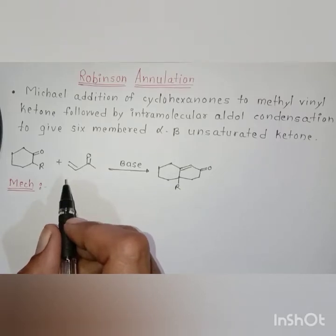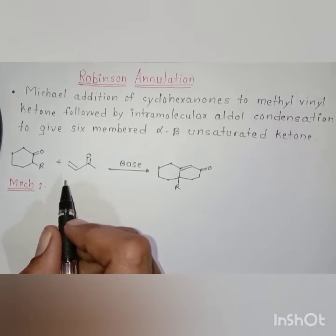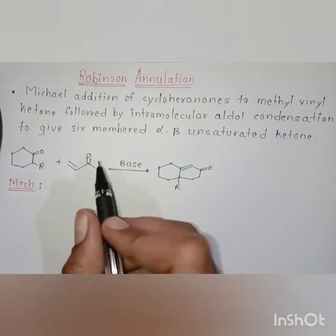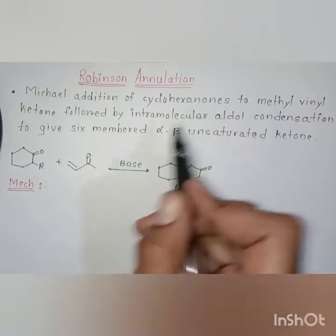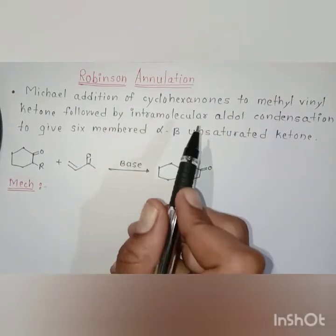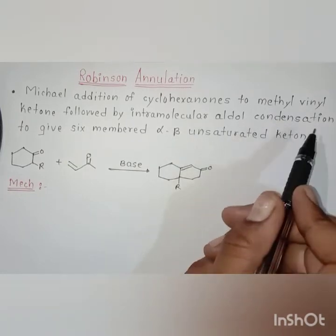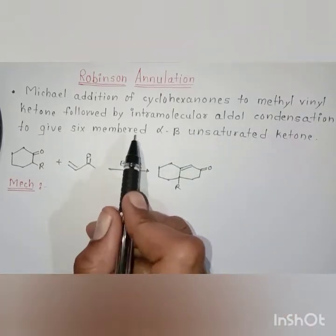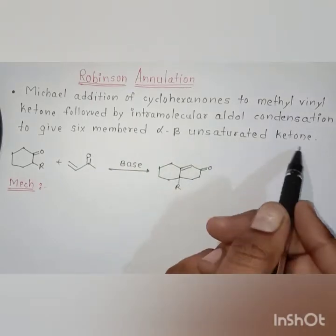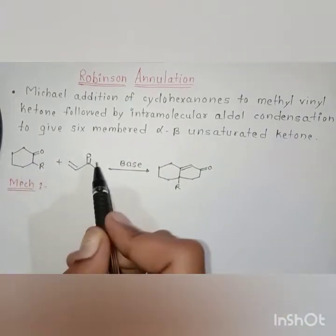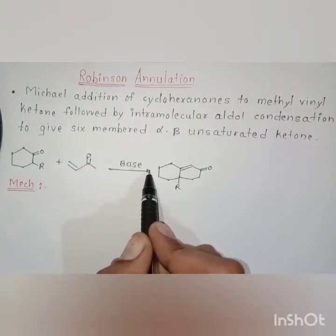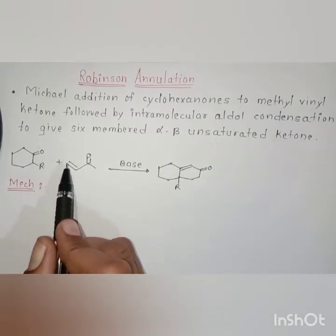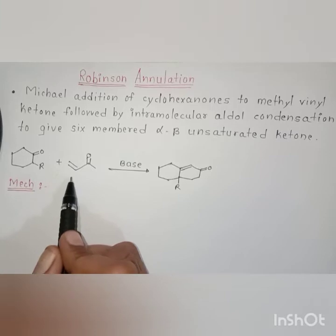Welcome to my channel SP Star Chemistry. Today I am going to discuss Robinson Annulation. Robinson Annulation is the Michael addition of cyclohexanone to a methyl vinyl ketone, followed by intramolecular aldol condensation, to give a six-membered alpha-beta unsaturated ketone. This is the cyclohexanone and this is the methyl vinyl ketone, and in basic conditions it undergoes Michael addition followed by intramolecular aldol condensation.